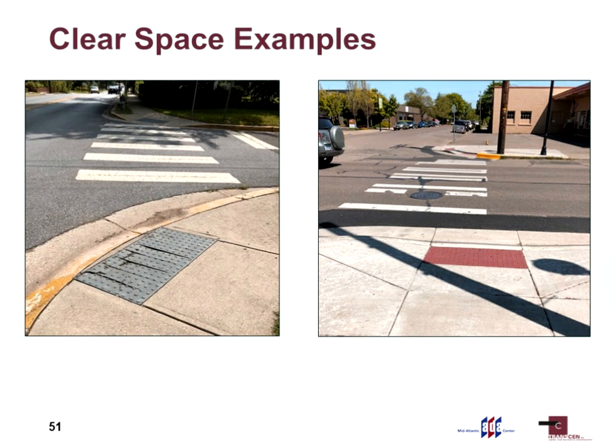Here are some bad examples of clear space. On the left picture, if you draw a square four feet out and four feet wide beyond the end of the curb ramp, you'd fall outside the crosswalk — meaning people crossing toward the top of the page would be outside the crosswalk, so it doesn't meet requirements. The picture on the left is from a construction project where they built curb ramps and planned to resurface the road later, but in the meantime the curb ramp actually lies outside of the crosswalk.